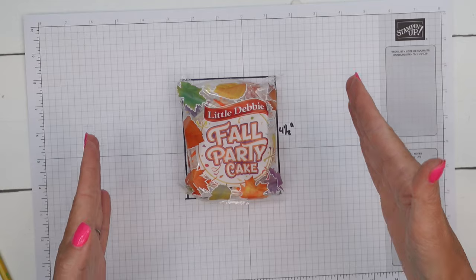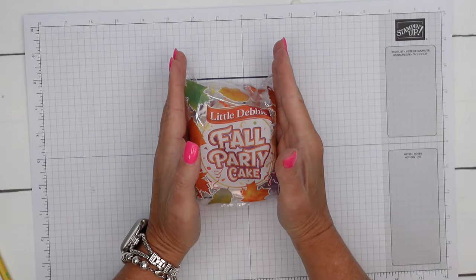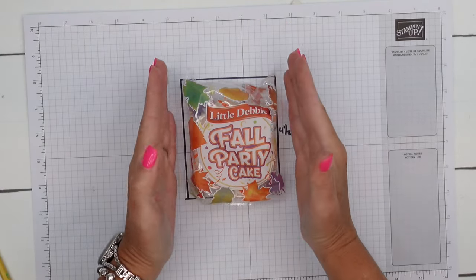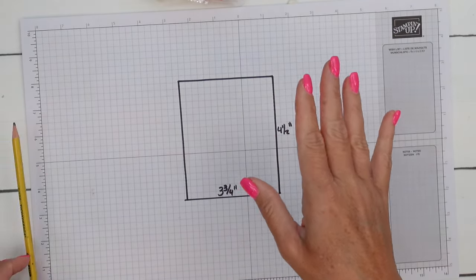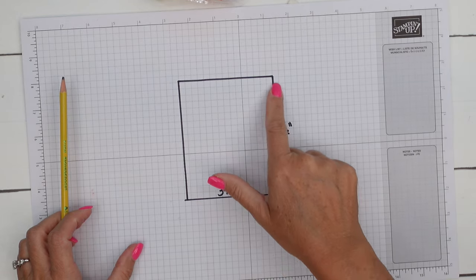Then you're going to draw a box around it to fit it in. You want it to fit just right, not too big, not too small. And then once you've drawn those lines, you're going to measure it. This box is going to measure three and three fourths by four and a half.